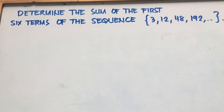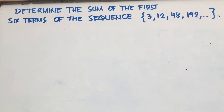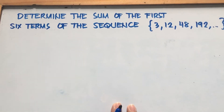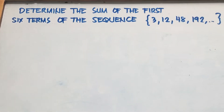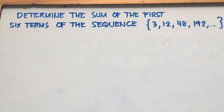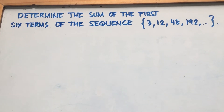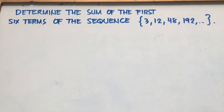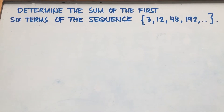Good morning. We are now here in our lesson that talks about geometric series. At this point, we have a problem where we need to determine the sum of the first six terms of a given sequence: 3, 12, 48, and 192.